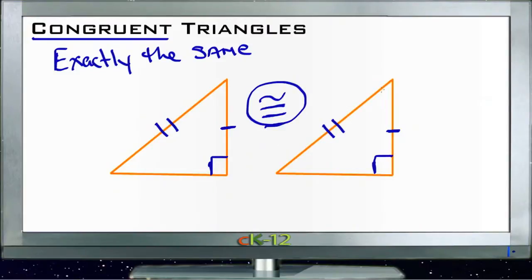We can also say that corresponding angles are congruent. Whether we know that ahead of time or not, if we know the two triangles are congruent then we know those angles are also congruent. So let's look at how these rules fit in with the example problems and we'll go through them one at a time.